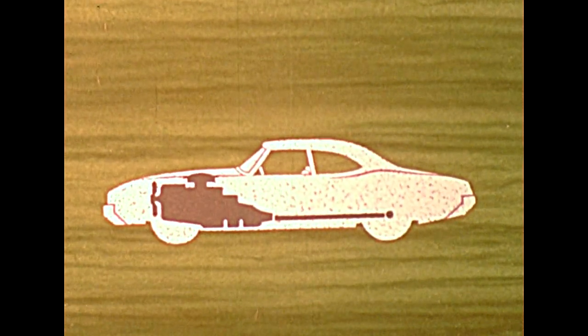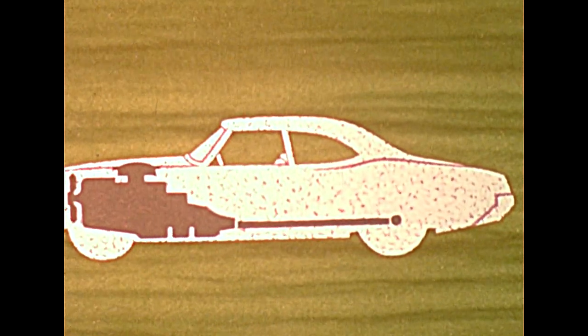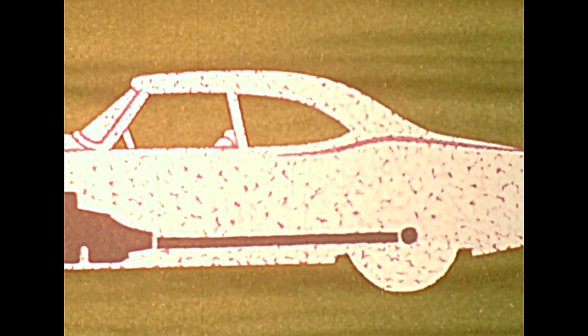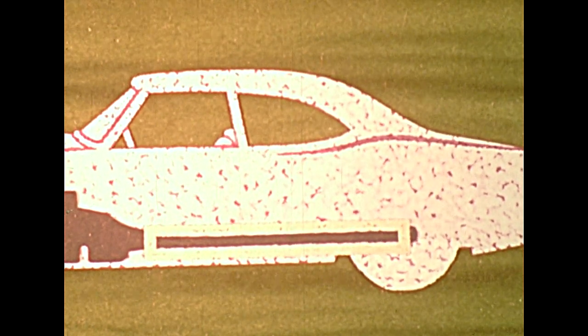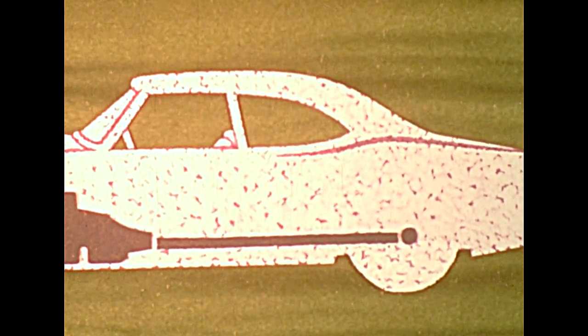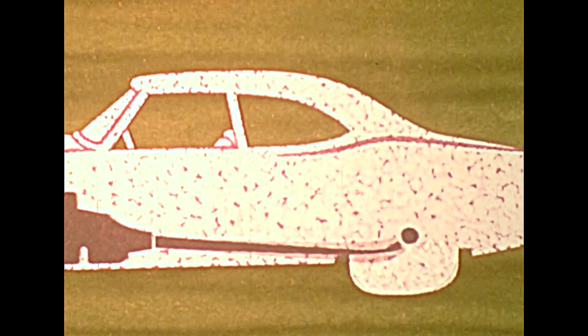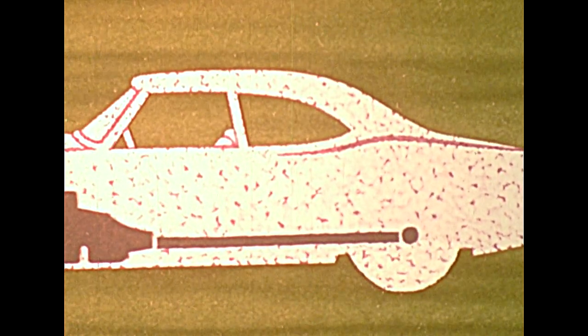Now let's have a look at the drive shaft. If the car had no springs, we could simply put the drive shaft in place, connected directly to the transmission and the rear axle. But with springs, as the car goes over bumps, the wheels move up and down with relation to the frame, and the shaft would be bent.